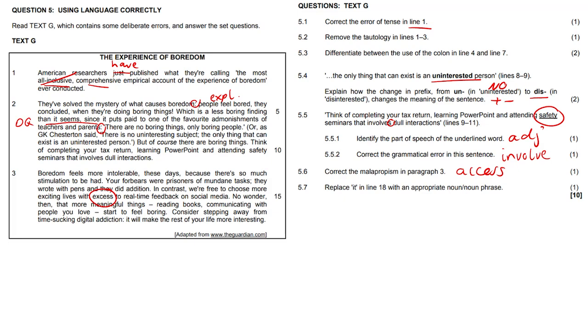5.7, replace it in line 18 with an appropriate noun or noun phrase. If you look very carefully here, this it could mean a number of things. So they're asking you about ambiguity without asking you about ambiguity. Consider stepping away from time-sucking digital addiction. It will make the rest of your life more interesting. What's going to make the rest of your life more interesting? Is it stepping away? This change? A shift in focus? Yeah, you need to replace it. So we can go with stepping away or this step or shift in focus or this change, whatever it is. Let's just go with, yeah, answer here being this step because they did mention stepping away and that's it. That's the question.